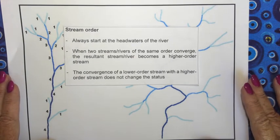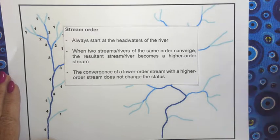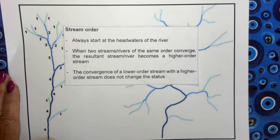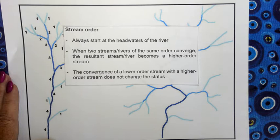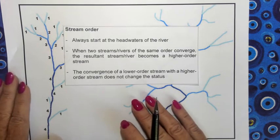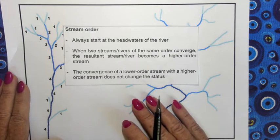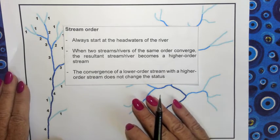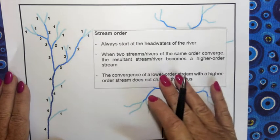This video is going to show you how to determine stream order. There are three things to take into consideration. One: always start at the headwaters of the river. Two: when two streams or rivers of the same order converge, the resultant stream becomes a higher order stream. Three: the convergence of a lower order stream with a higher order stream does not change the status.